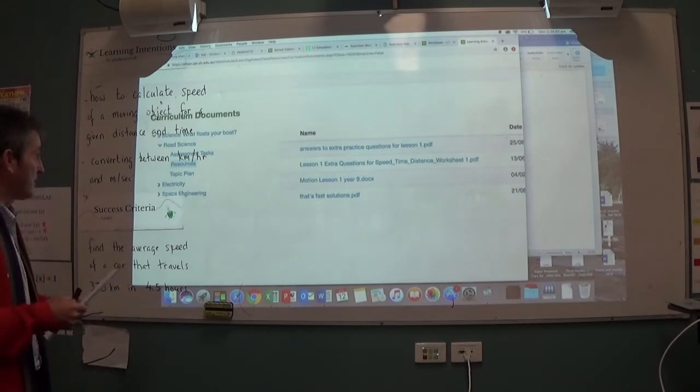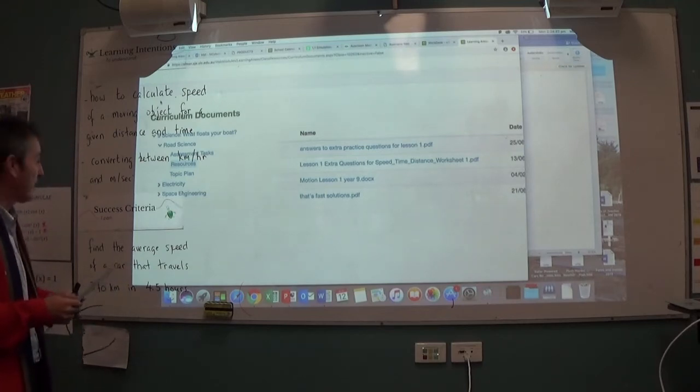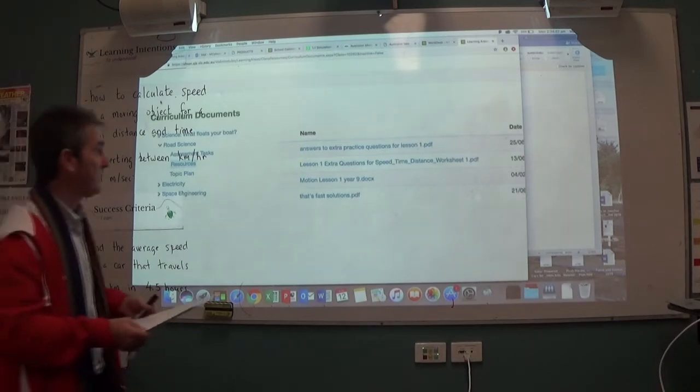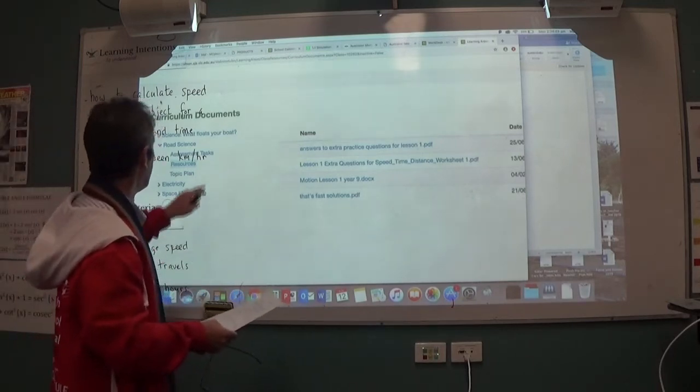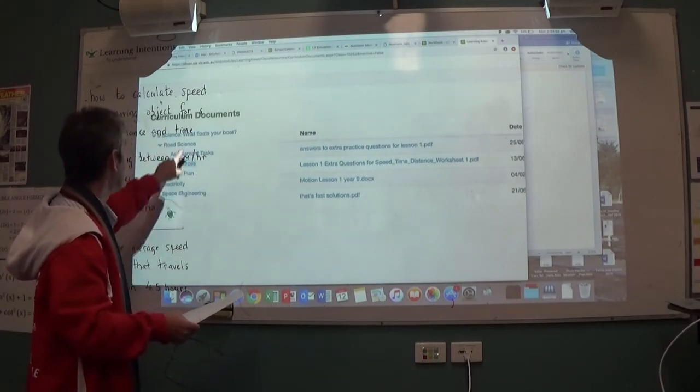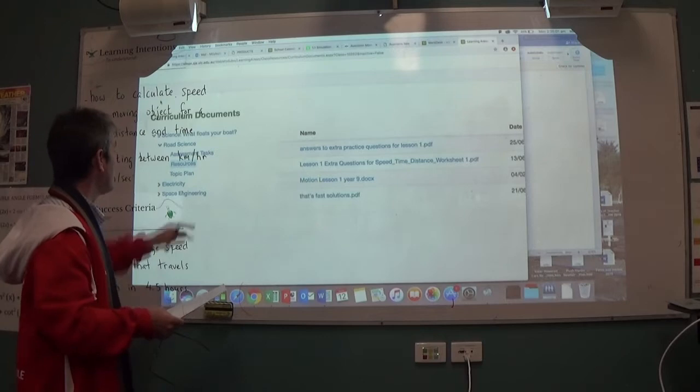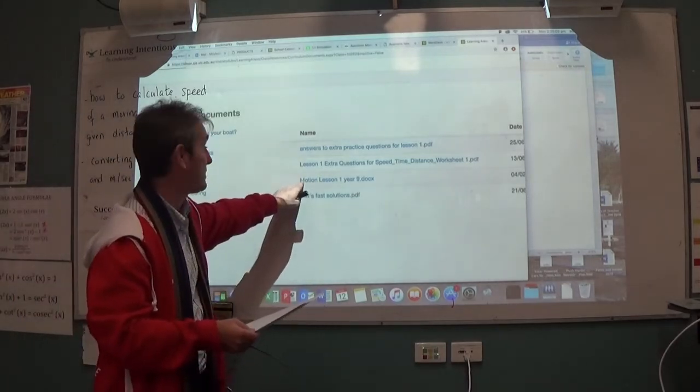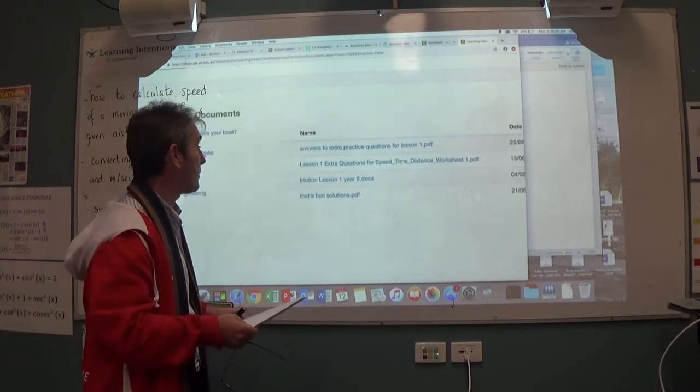Hopefully by the end of the exercise you can actually do a number of things, including how to find the average speed of a vehicle, such as a car travelling 370 kilometres in 4.5 hours. The first thing I need you to do is, in the folder on Solomon under the Curriculum Resources, go to road science and download the notes that I need to fill out for today's lesson, which is Motion Lesson 1 for Year 9.